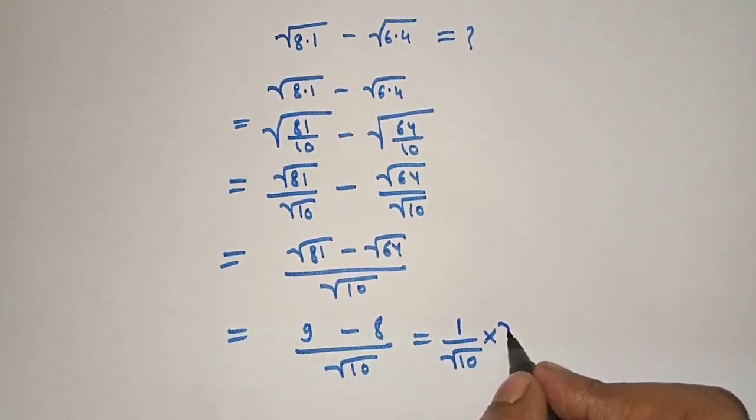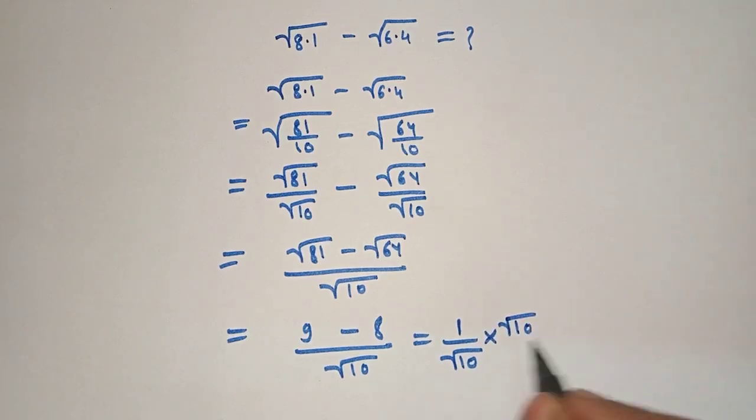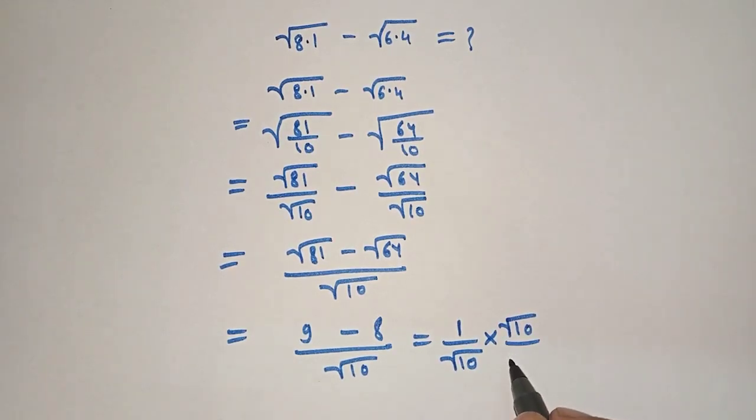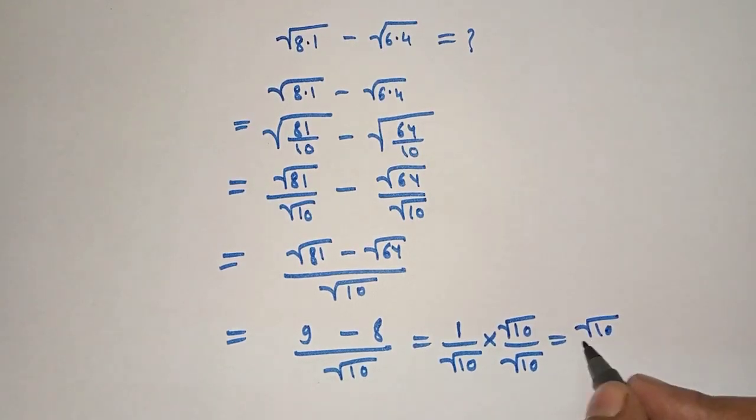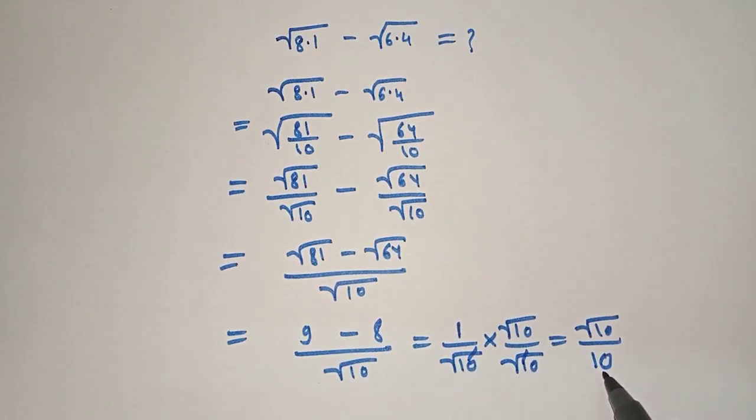In numerator and denominator. Therefore it will be equal to under root 10 by 10. By multiplying under root 10 into under root 10, the root cancels and 10 remains.